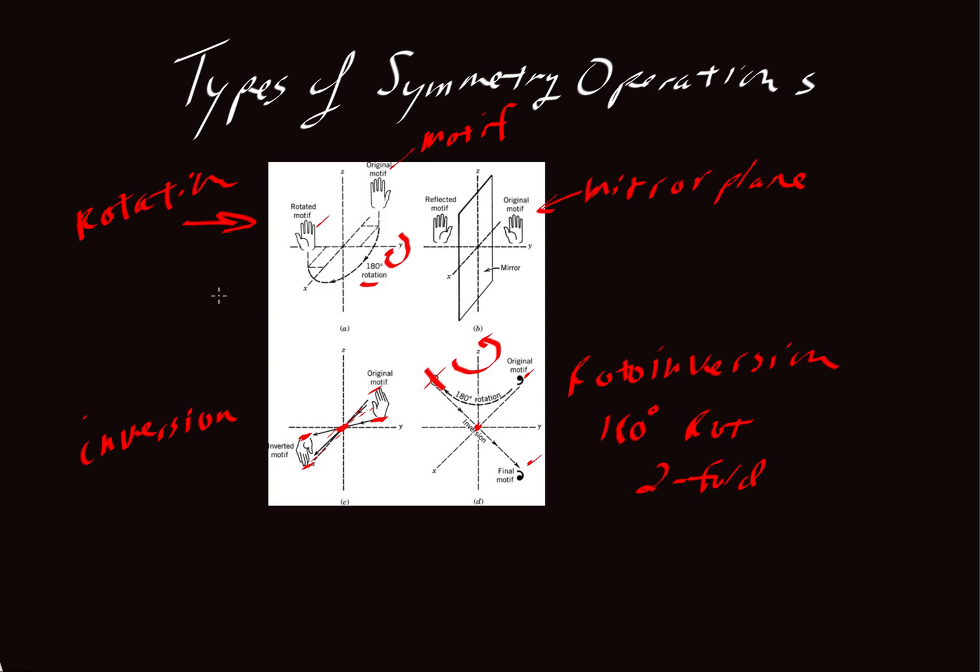Now these all get different kinds of symbols. So this rotation here, because it's 180 degrees, it is also a two-fold rotation. So we call it a two. For a mirror, we simply use the letter M. For inversion, we use I. For two-fold rotoinversion, so we'll just complete that here, we use a bar two.